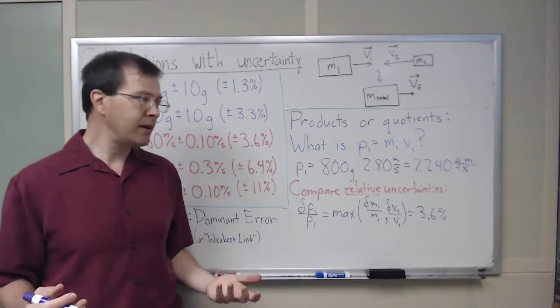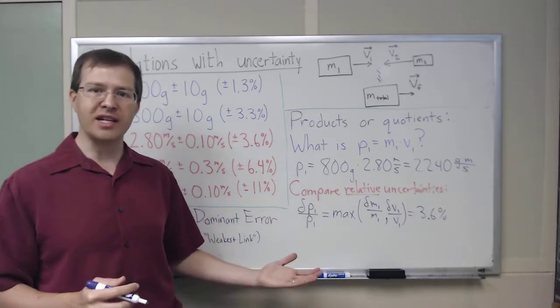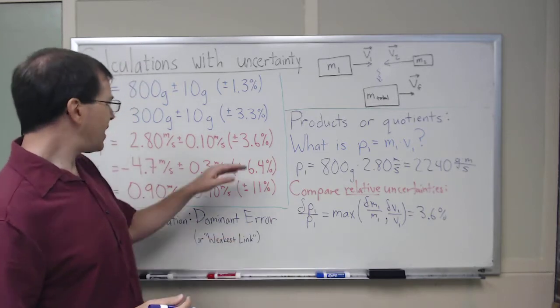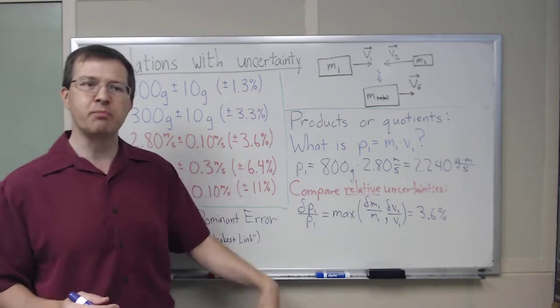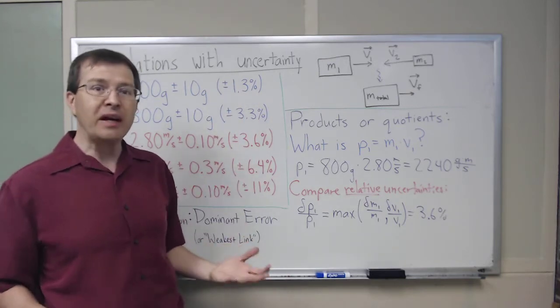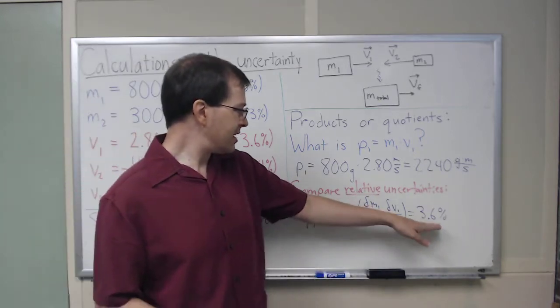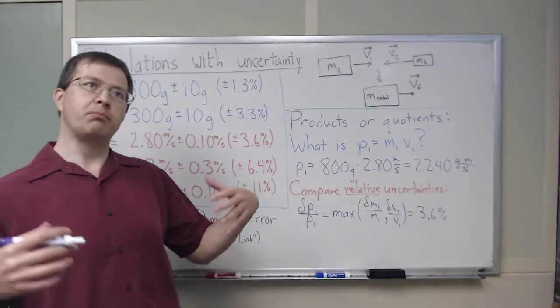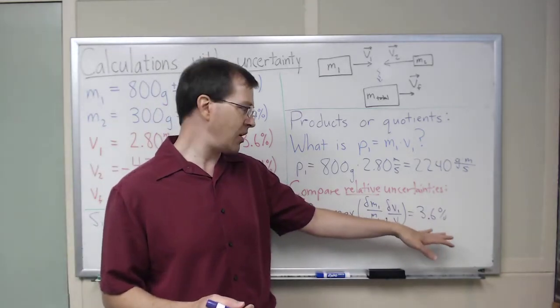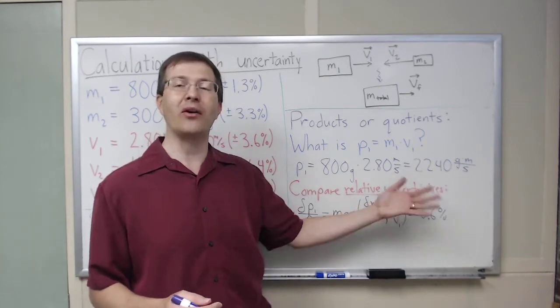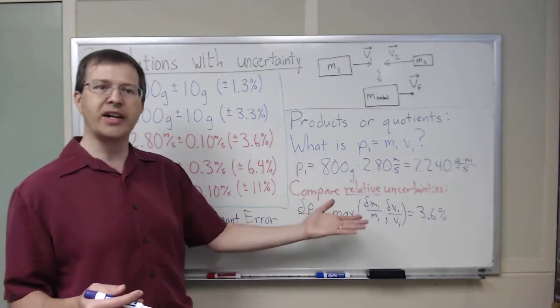I should say that, as usual, dominant error is an underestimate. It's always an underestimate. But because this 3.6% is substantially bigger than 1.3%, more than twice as big, it's actually going to be a pretty good approximation. I would be surprised if the full professional error propagation for this came out to be more than 4% or so. It would round to one sig figure, it would round to the same percentage. So this is a very solid estimate in this case.